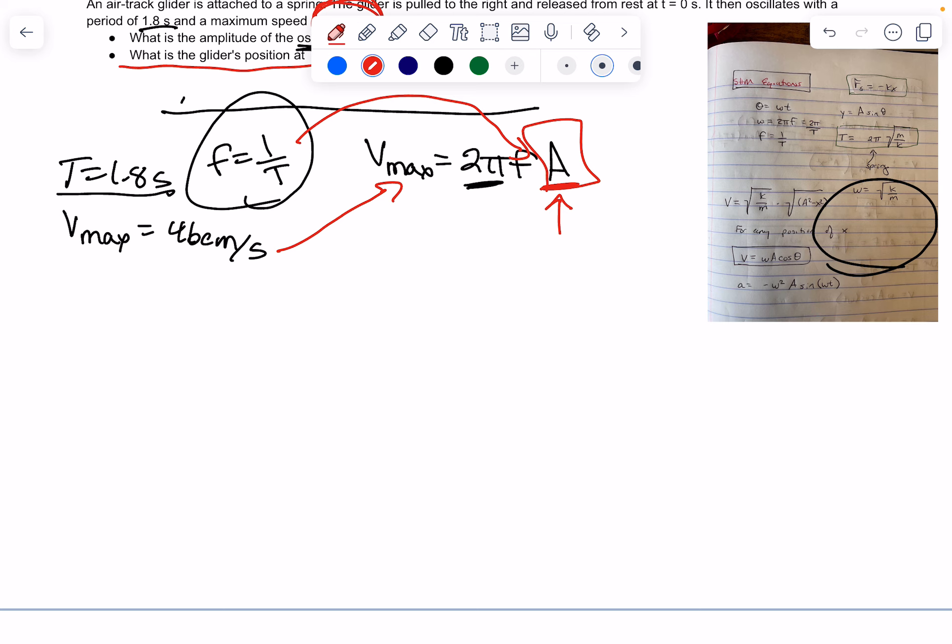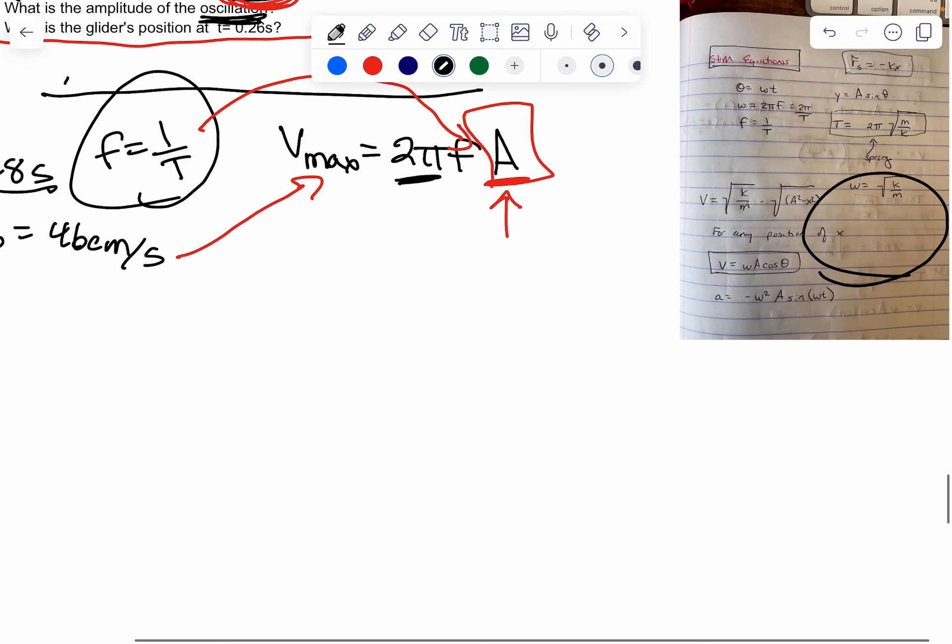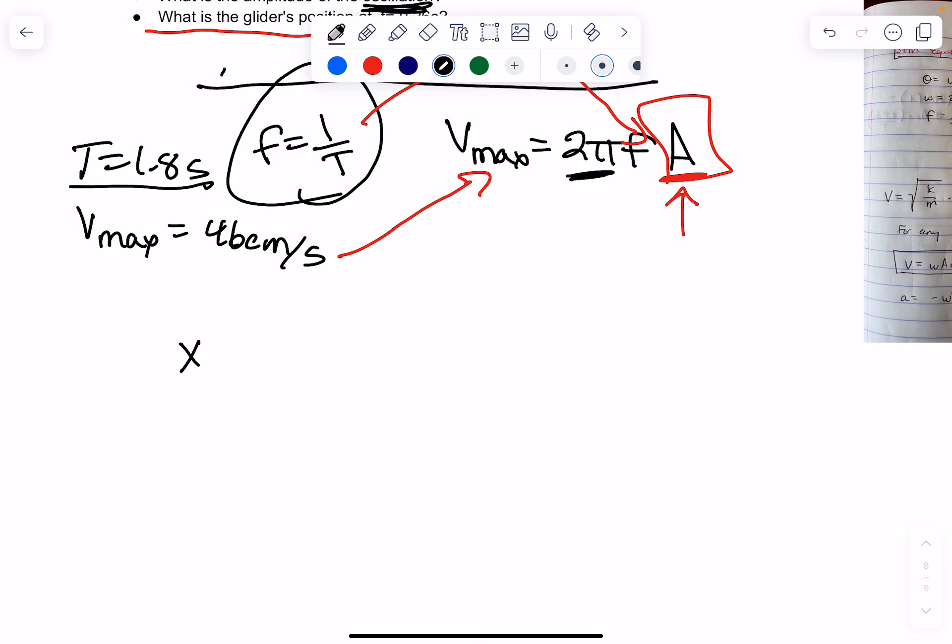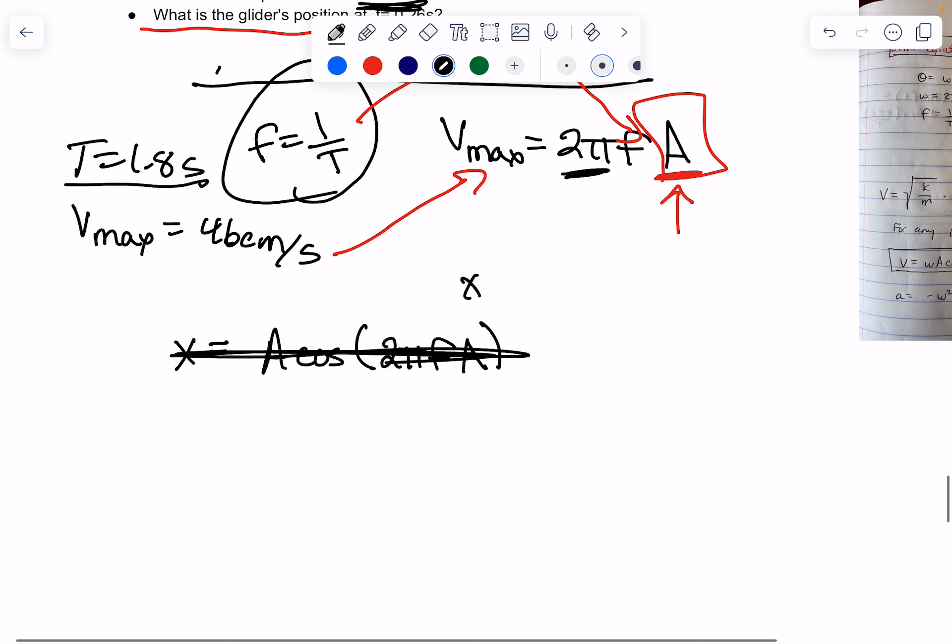So, the relationship between the equation, I probably got it over here. Actually, maybe I don't. I don't have that equation in this area. Okay, but the other equation is that the position of something that's oscillating is equal to, because it follows like sines and cosines, it's A cos of 2 pi f A. No, it's not A cos. It's just cos. No, this is right. I'm doing this wrong. It's actually x equals A cos of 2 pi f T. That's what it is.